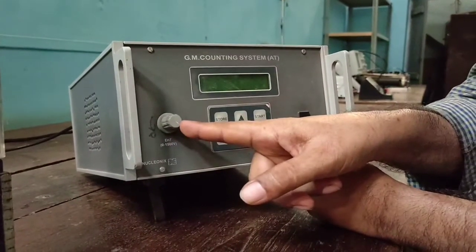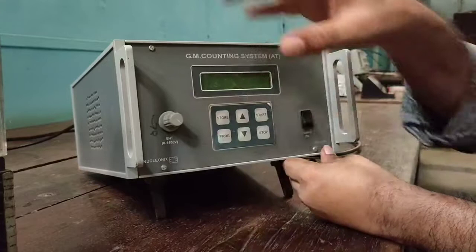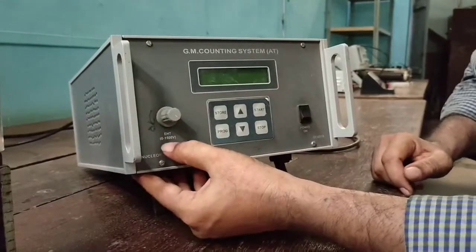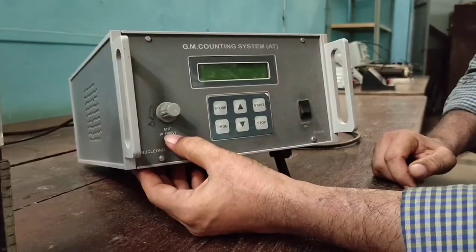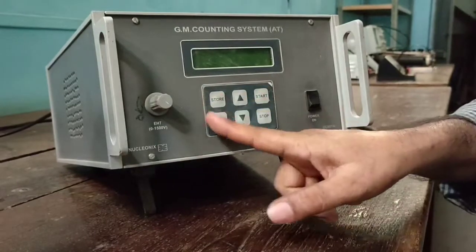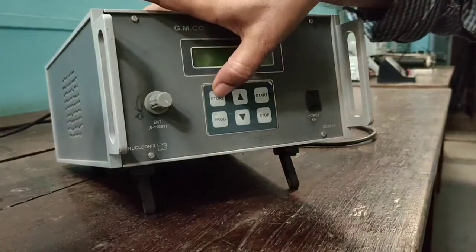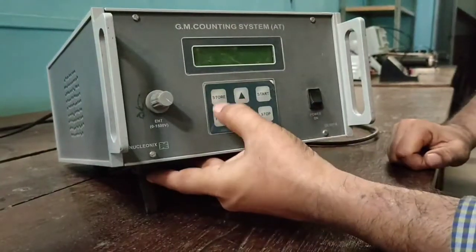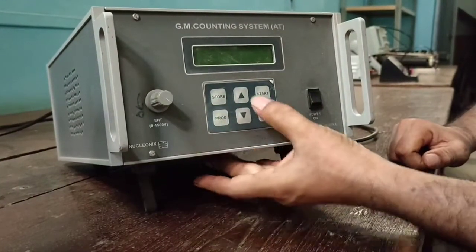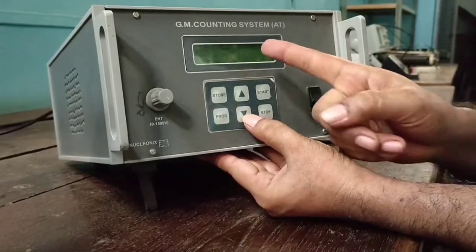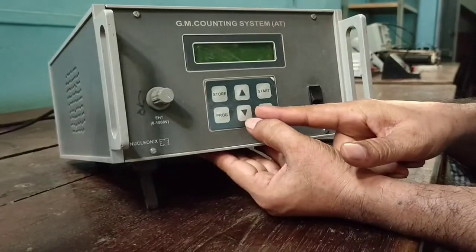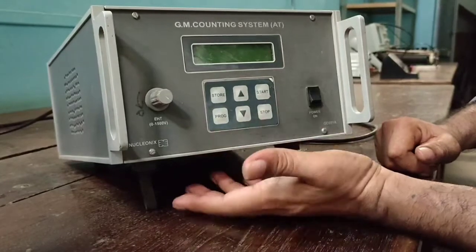Here is a knob, and this is the one through which you can vary the voltage applied to the counting system from 0 to 1500 volt. And on this panel, there are different working modes: store, program setting, two cursors, one to change the digit position, another to vary the digit, start button, stop.